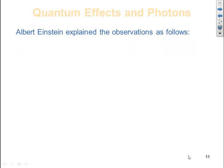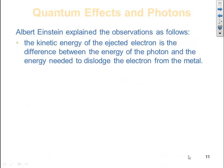Albert Einstein explained the observations as follows. The kinetic energy of the ejected electron is the difference between the energy of the photon and the energy needed to dislodge the electron from the metal.